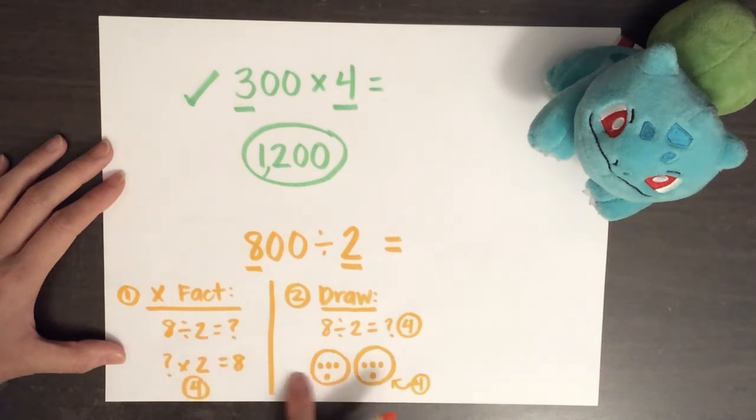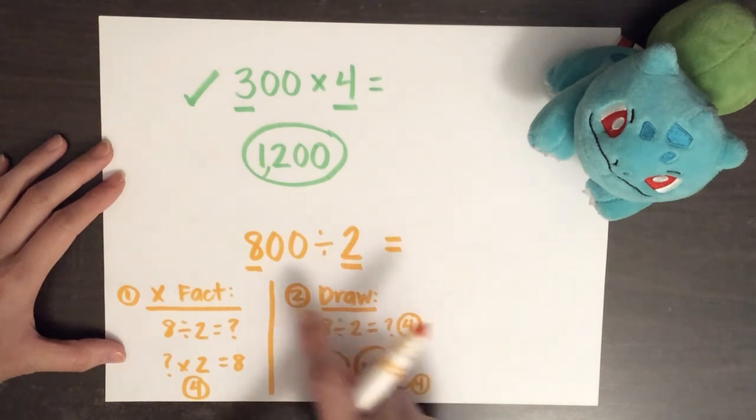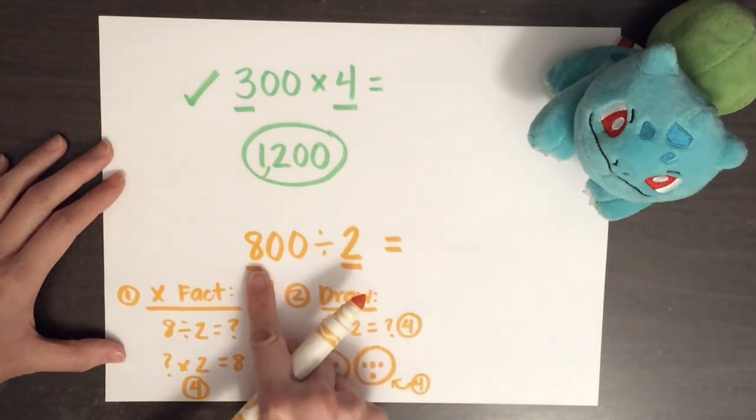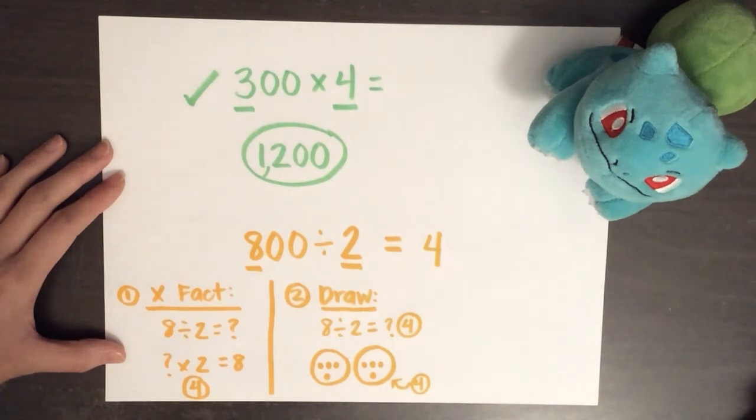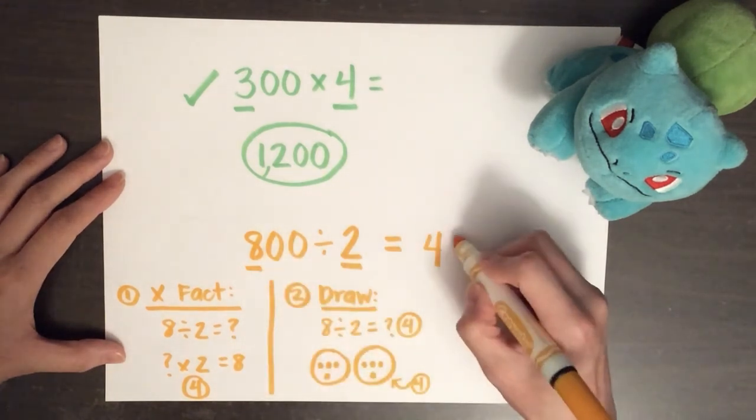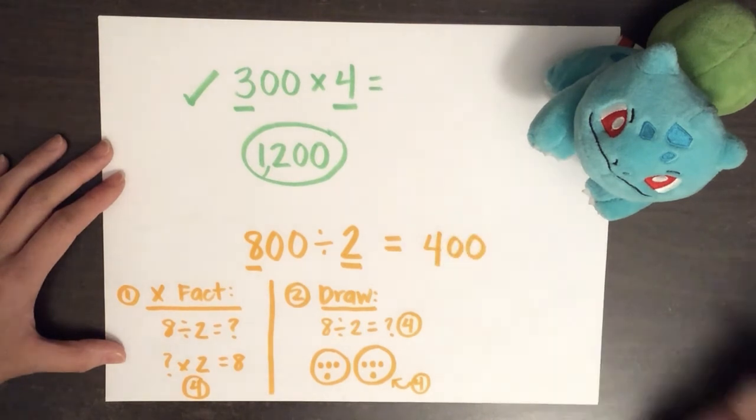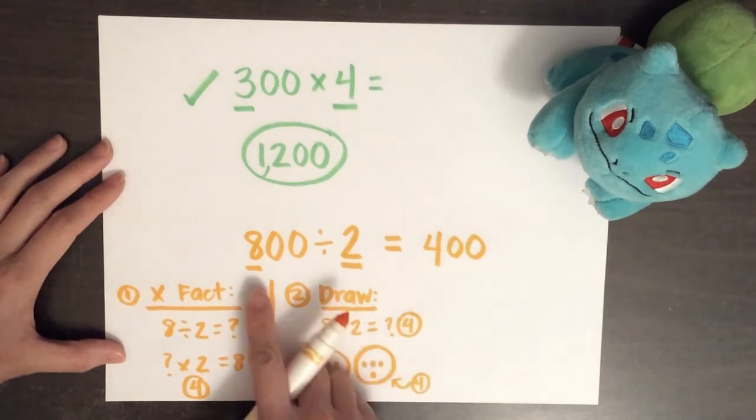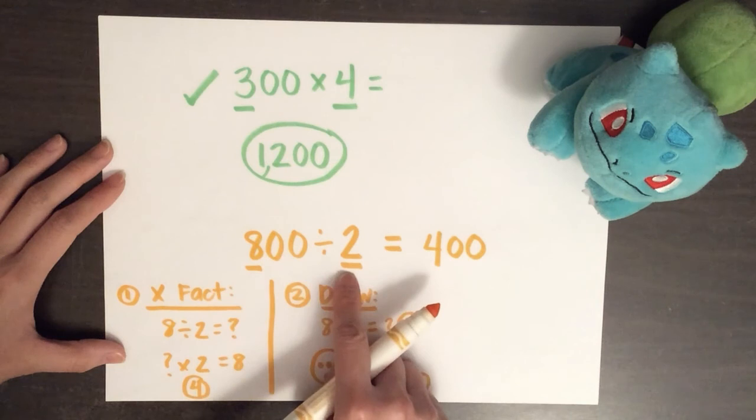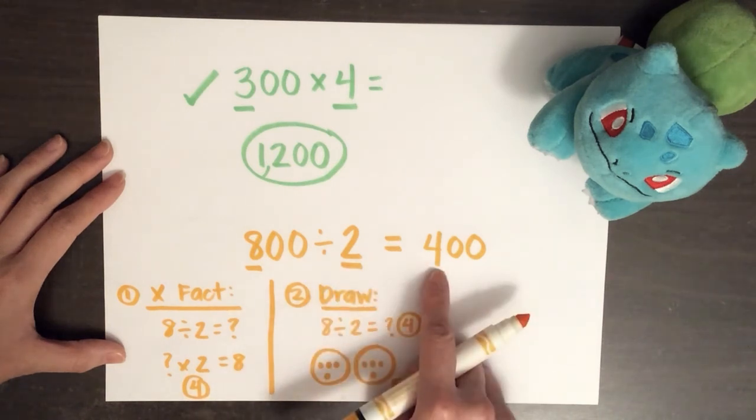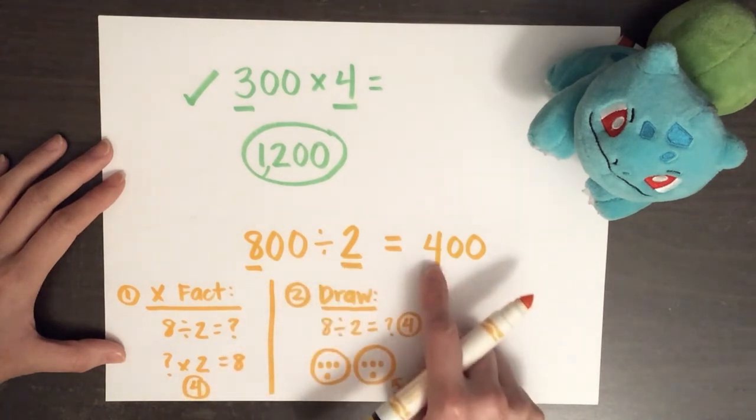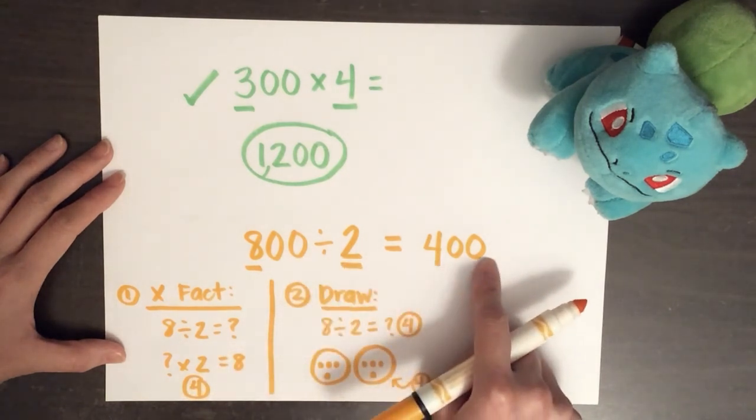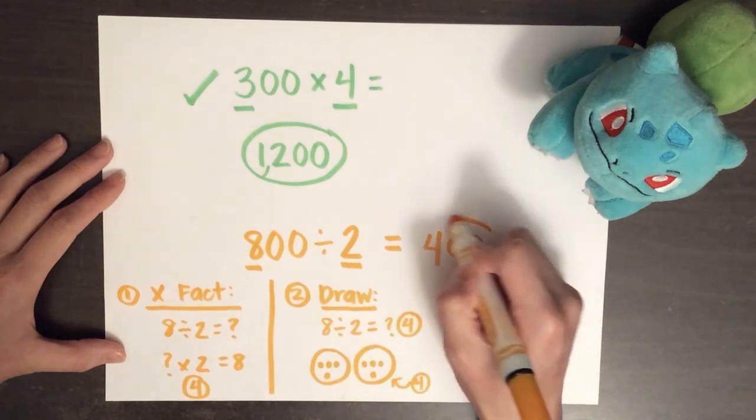So, now let's go back to the problem. Eight divided by two, we figured out, is four. And now there are two zeros, which we can add. So, because eight divided by two is four, I know that eight hundred divided by two is equal to four hundred.